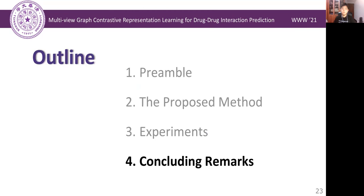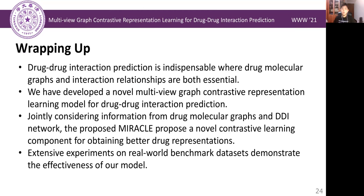Well, let's conclude the presentation. The drug molecular structural information and drug-drug interaction relationships are both important for DDI prediction tasks, and the graph neural networks provide suitable architectures to encode them. Based on GNNs, we develop a novel multi-view graph contrastive representation learning model for the DDI prediction task.